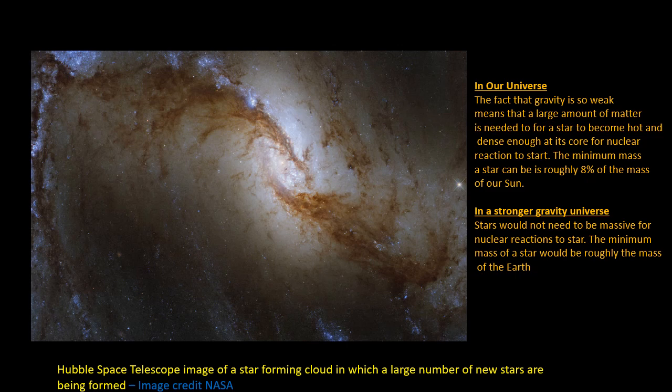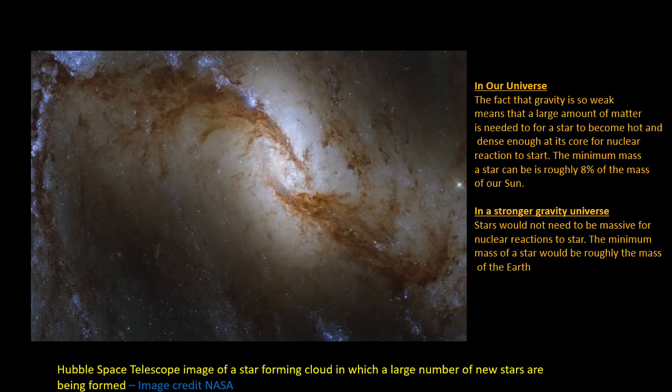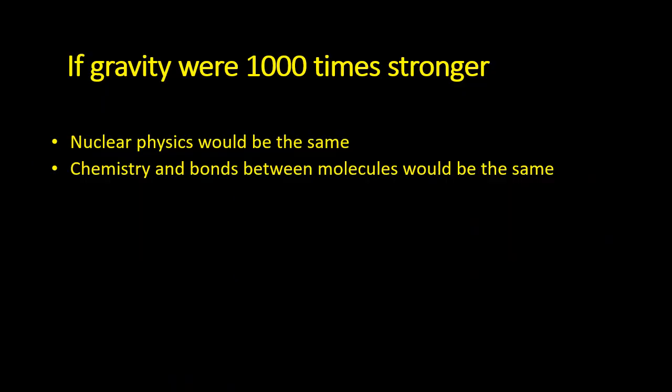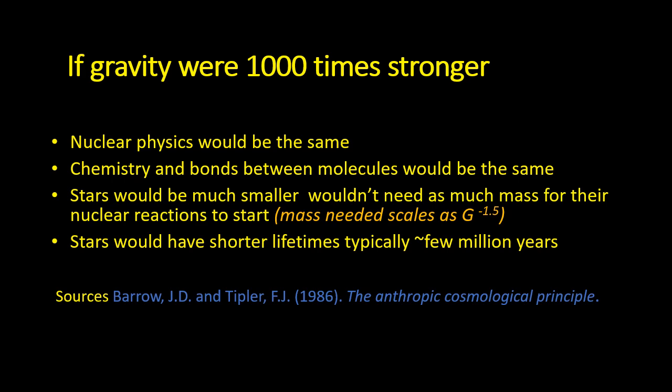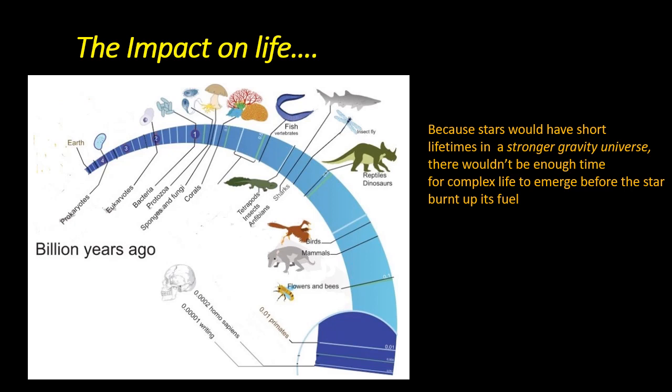In this moment, stars would need 30,000 times less mass to become hot and dense enough for nuclear reactions to start. The reason for this is because the amount of mass needed to form a star scales as the strength of gravity to the power of minus 1.5. These mini stars would have much shorter lifetimes, perhaps a few million years rather than 10 billion year lifetime which our Sun has. If we went even further and made gravity a million times larger, the lifetime of stars would be even less, perhaps thousands of years. In such a strong gravity universe, there couldn't possibly be enough time for the evolution of complex life to have happened.